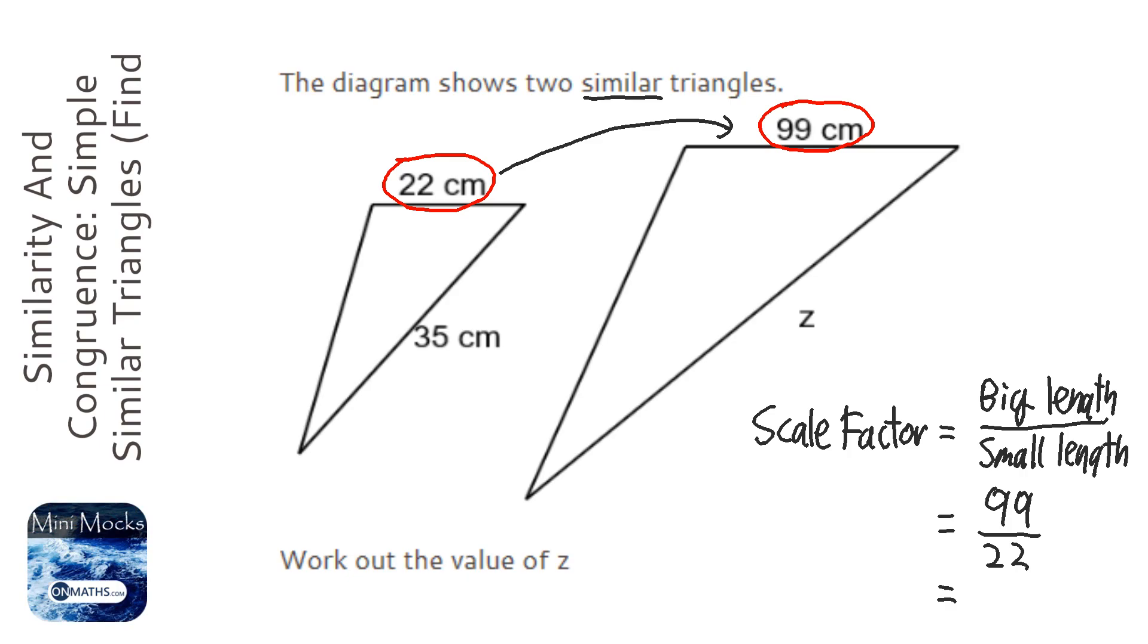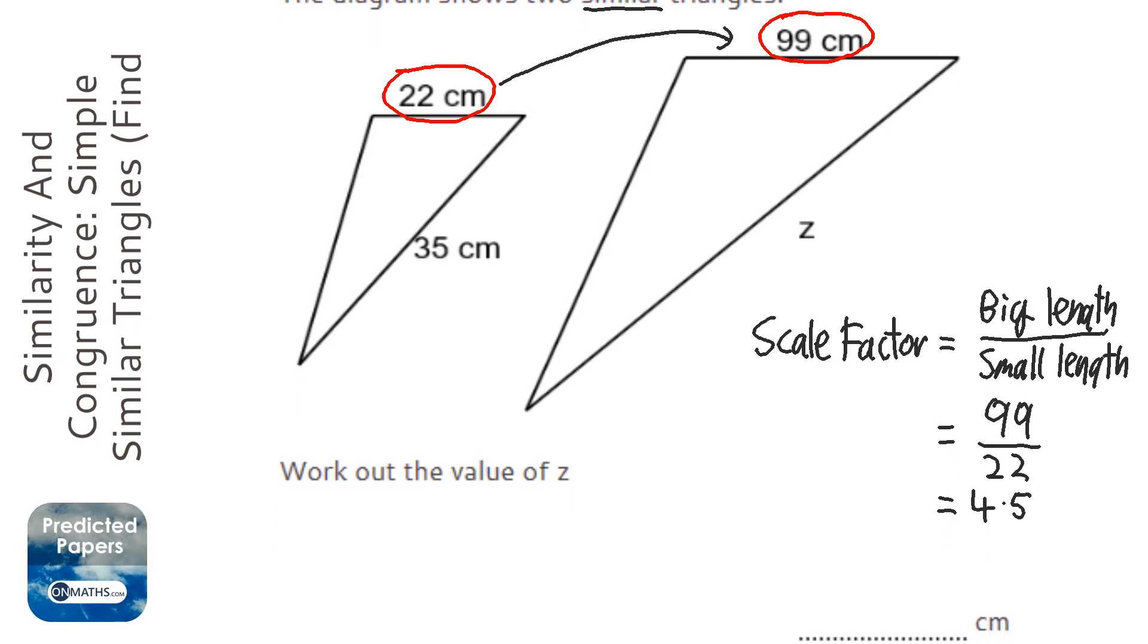It's going to be 4.5, so that means all lengths on the small triangle were times by 4.5 to get to their new lengths on the big triangle. Next thing we need to work out is what the big length is. When you're going from small to the big triangle, all you need to do is times it by 4.5.